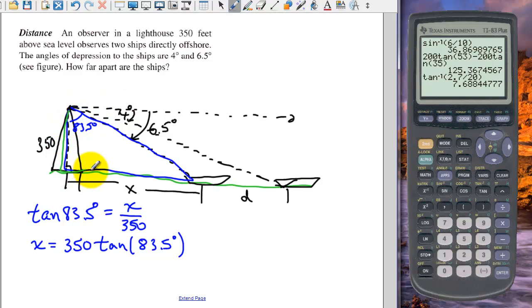Up to the furthest boat. So this time we have to figure out this angle here, which is going to be 90 minus 4 or 86 degrees. So tangent of 86 degrees is x plus d over 350. And again we solve for our letters first.